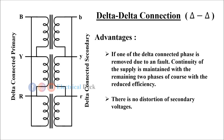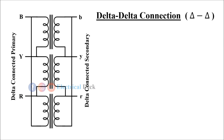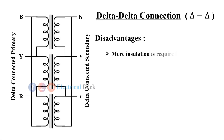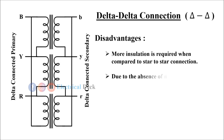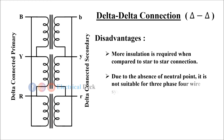There is no distortion of secondary voltages. But the drawbacks of this type of connection are: more insulation is required when compared to star-to-star connection, and due to the absence of a neutral point, it is not suitable for a three-phase four-wire system.